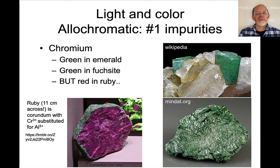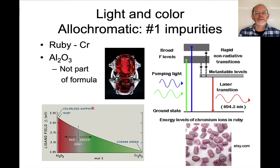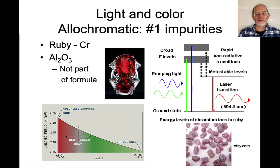This green mineral is a chromium variety of zoisite, which is a calcium-aluminum epidote group mineral. In ruby, a small amount of chromium absorbs in the blue to green region through a series of transitions, and it emits in the red region. Here are some examples of natural rubies.